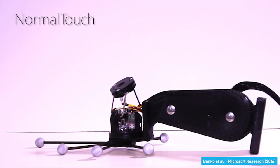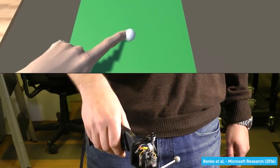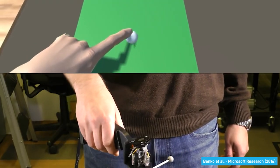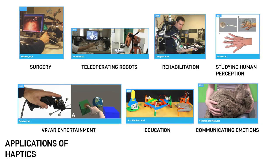Haptic interfaces are also typically used to make virtual content more immersive through sensory feedback as in this example of touching the buttons on the screen or by rendering the shapes in virtual reality. These capabilities make haptic interfaces suitable for a large number of important applications such as surgery, robot teleoperation, rehabilitation, the study of human perception, VR and AR applications in general, as well as the entertainment industry, education, and communicating emotion.